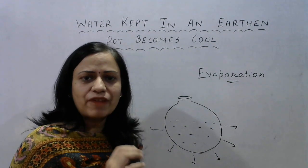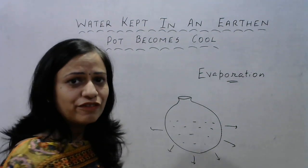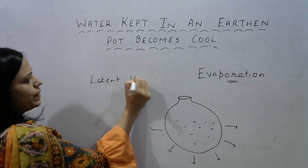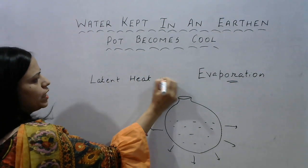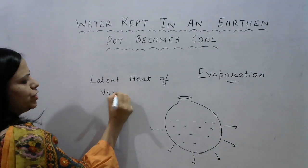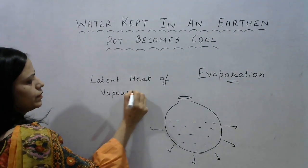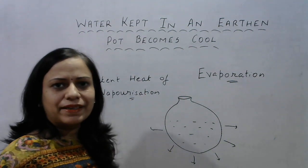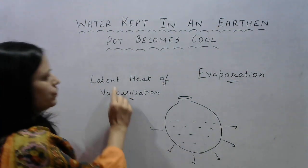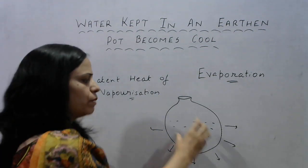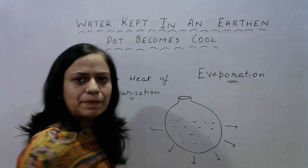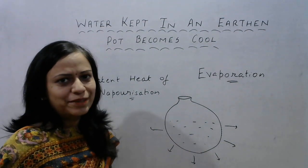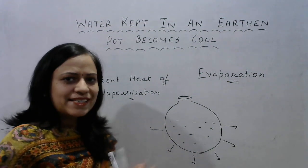From the outer surface of the pot, the water keeps evaporating, and for evaporation, water requires to absorb latent heat. From where is it taking that latent heat of vaporization? Yes, you have heard me right, I'm talking about the latent heat of vaporization. If you are not aware of this phenomena, you need to see my video on this concept. The latent heat of vaporization is absorbed from the water that is present inside the pitcher or the pot, and that is what is cooling down the water inside the pot.